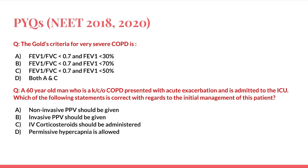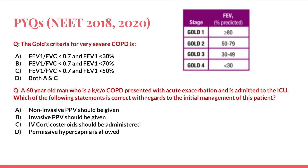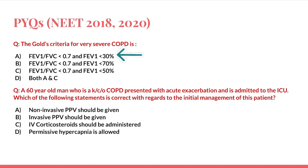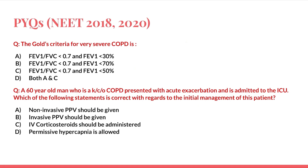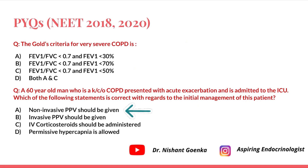Returning to the questions: for very severe COPD, the GOLD table shows FEV1 less than 30%, so option A is correct. For the 60-year-old COPD patient in the ICU, initial management always involves non-invasive PPV (NIV). Invasive ventilation is only considered if the patient collapses. IV corticosteroids are not administered, and permissive hypercapnia is not allowed. So non-invasive PPV is the correct answer.